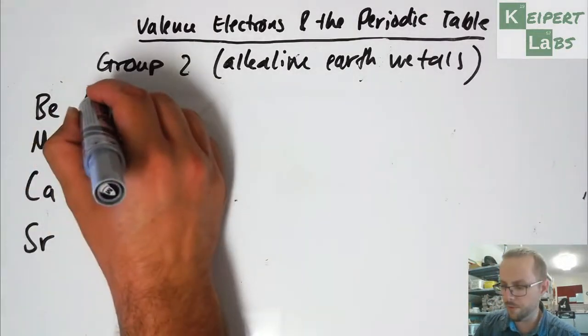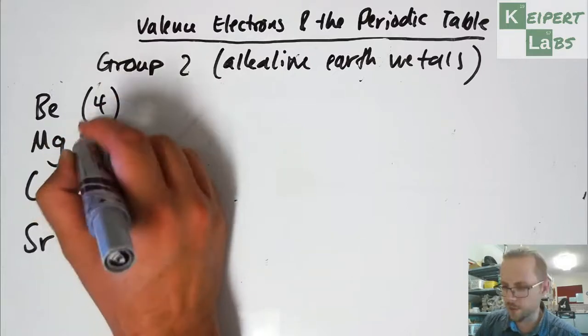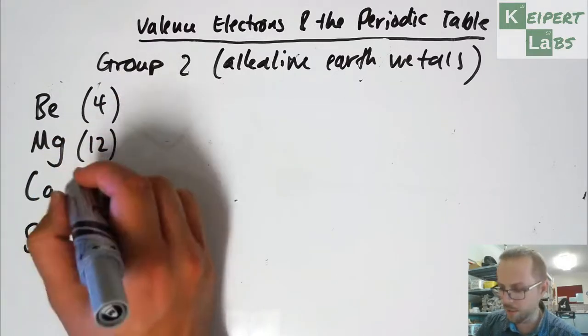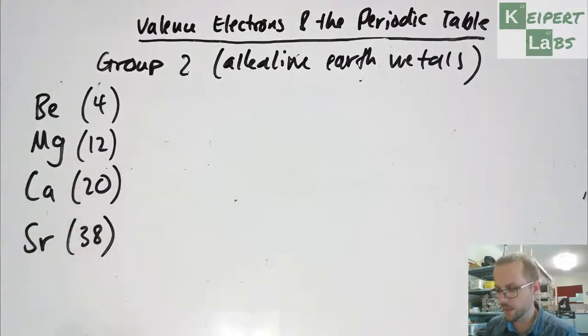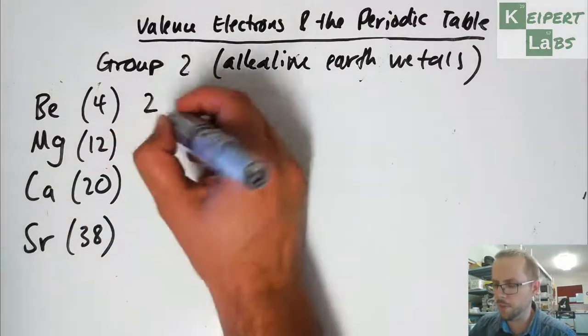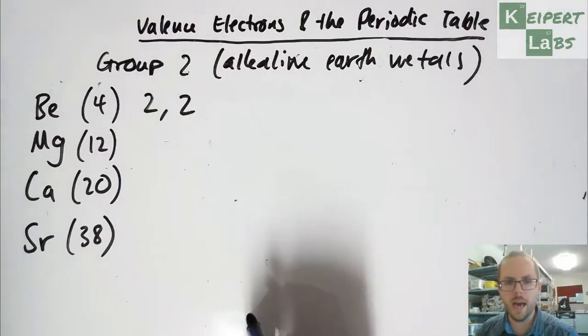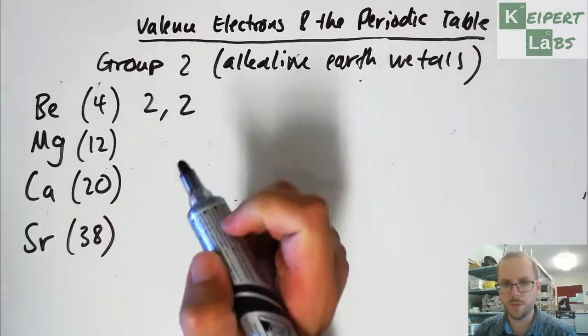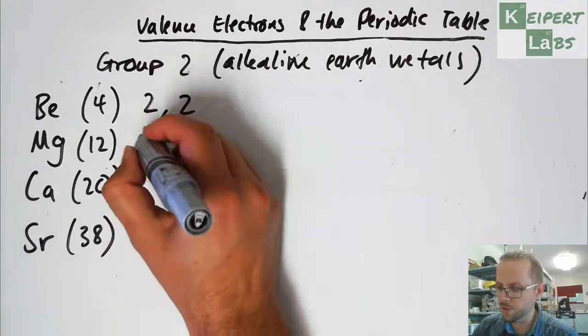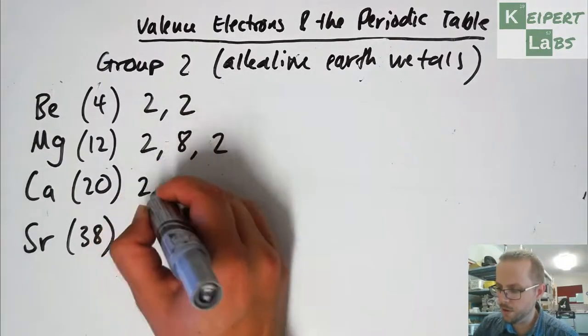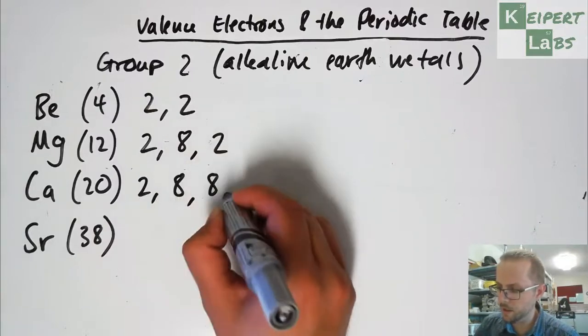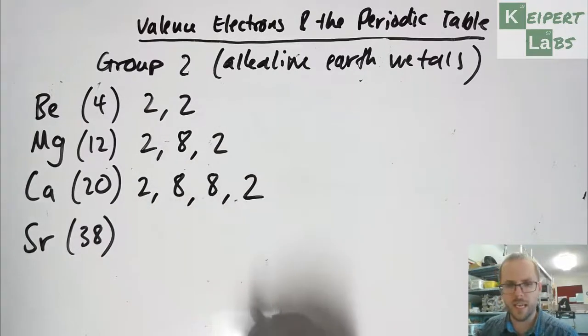So beryllium has an atomic number of four, magnesium has an atomic number of 12, calcium is 20, and then strontium is 38. So we'll see how far we get with strontium. But all right, so for beryllium, we can do two, and then that fills the first shell, and then two in the next one. Magnesium, we do two, and then eight, and then two. Calcium, two, eight, eight, two. We're taking what we did for potassium, and we're adding one on.